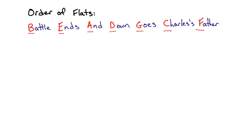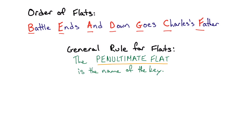Flats always appear in the key signature in that order. So if we only have two flats the order is going to be B♭, E♭ — you won't see any other flats when there are only two. If there are four flats in a key signature, you'll always see B♭, E♭, A♭, D♭ in that order. The general rule for flat key signatures is that the penultimate flat — the second to last flat — is the name of the key.